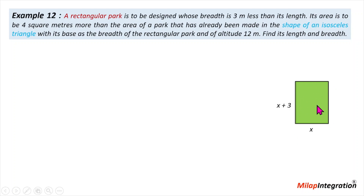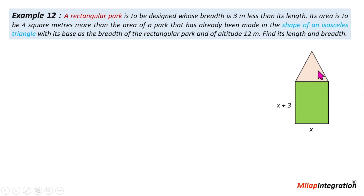Its area means this rectangular area is 4 square meters more than the area of a park that has already been made in the shape of an isosceles triangle. The area of the rectangle is 4 square meters more than the area of the triangle.